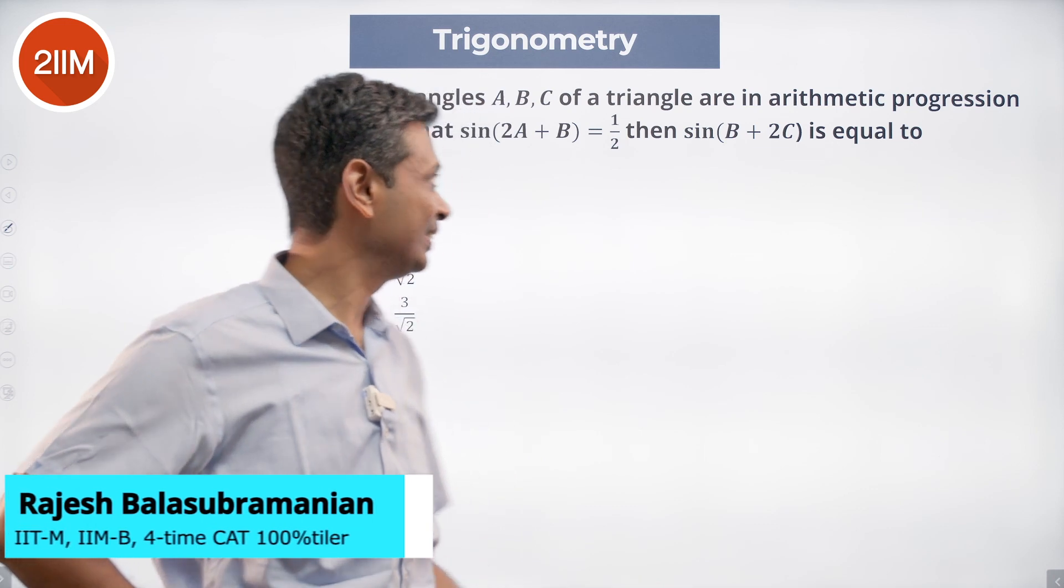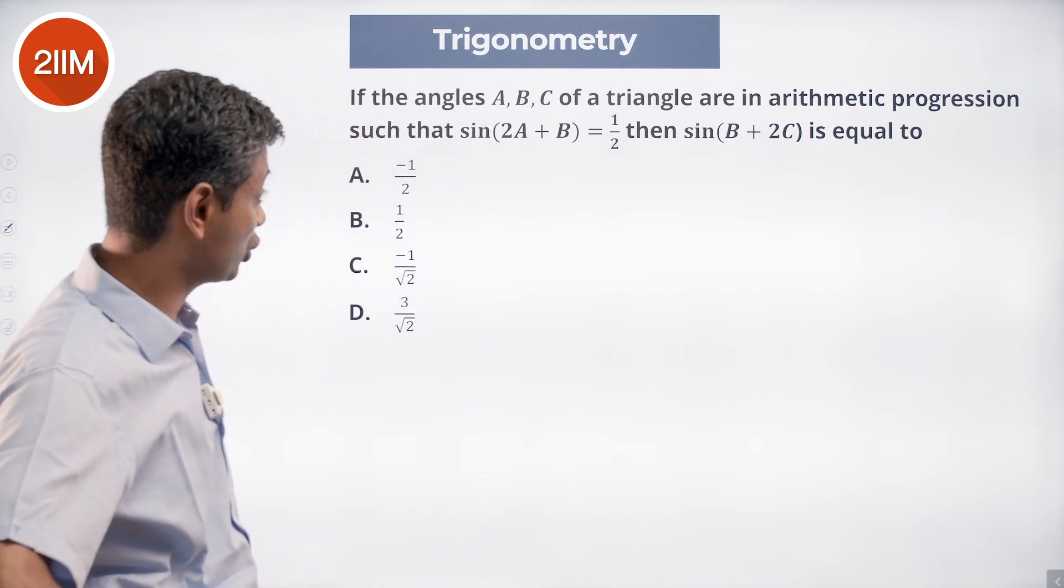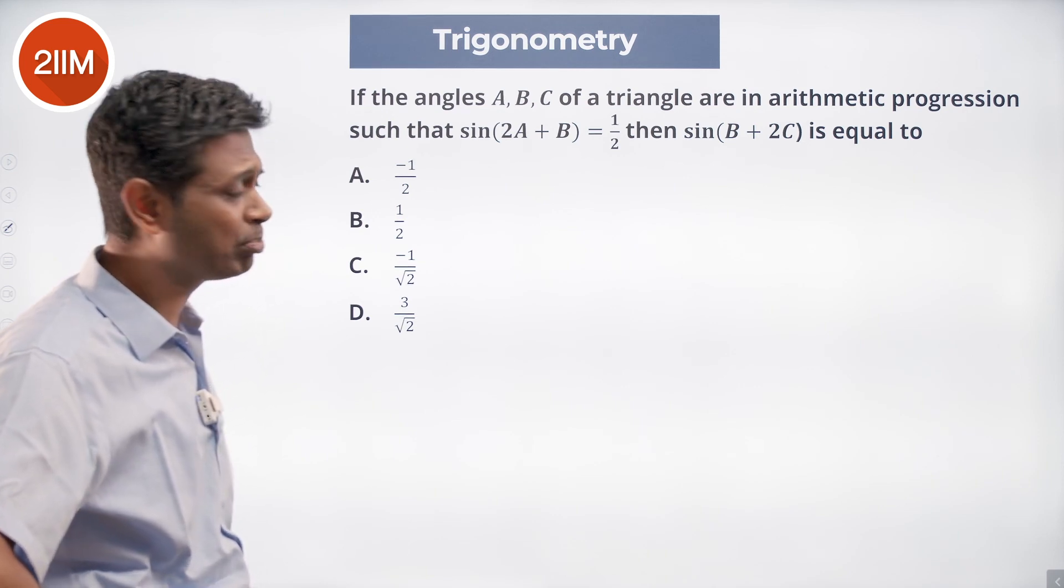It is a rather pleasant question. We want to find angles A, B, C of a triangle in arithmetic progression such that sine(2A + B) is half, then sine(B + 2C).